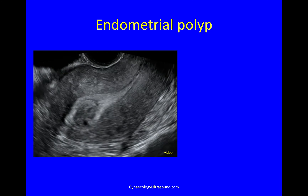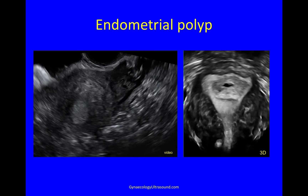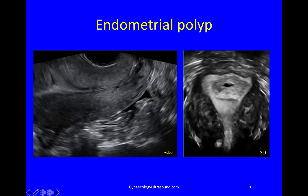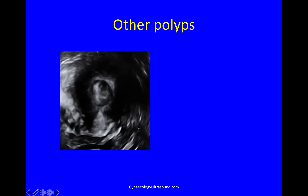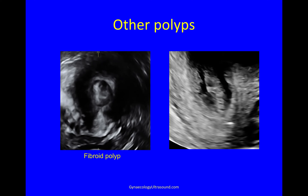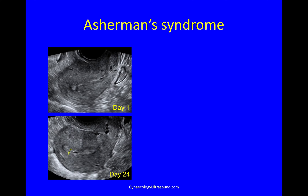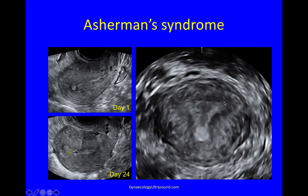Endometrial polyps show up very nicely on ultrasound. This is a tamoxifen-related polyp, and on 3D you can see a very clear outline of the polyp in the cavity — useful when 2D is uncertain. There are different kinds of polyps: this more hypoechoic lesion is a fibroid polyp or submucosal fibroid, and this is a small cervical polyp. In a case of Asherman syndrome following miscarriage and ERPC, a very thin endometrium was seen on day 1 with myometrial adhesions, and on day 24 the endometrium remained very thin. On 3D the endometrial cavity with multiple myometrial adhesions was clearly visible.